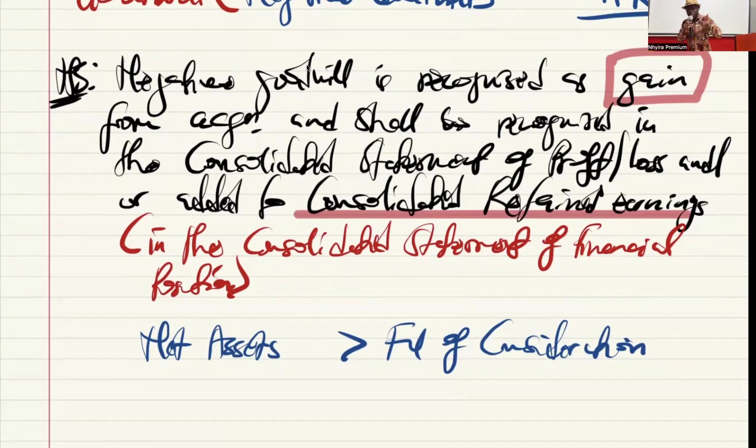But what are some of the reasons why this could happen? Yes, by default, the net asset is more than the fair value. But what are the circumstances? Why will this happen? So let's look at a couple of scenarios on why goodwill could be negative.